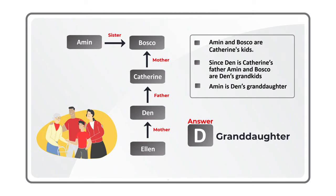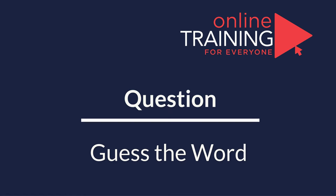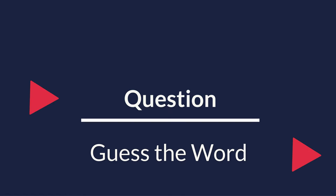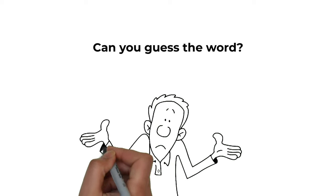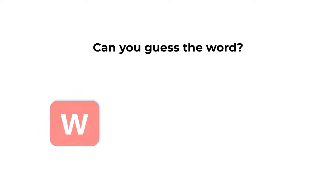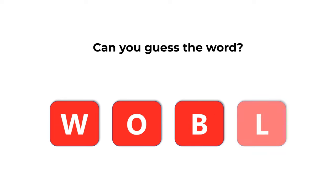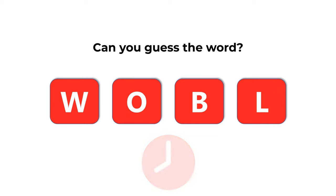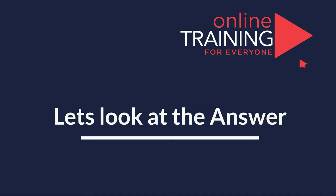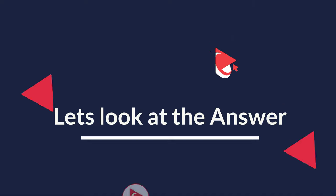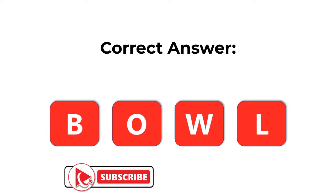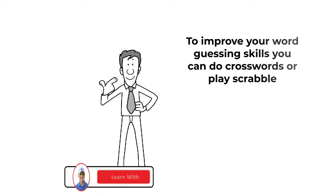Hopefully you've nailed this question and now know how to diagram and solve similar problems on the test. Here's a cool question that you frequently get on the test. You're presented with four different letters and you need to guess the word using all the letters presented. The letters are W, O, B, and L. Give yourself 10 to 15 seconds to see if you can come up with the answer. The correct answer is Bowl, spelled B-O-W-L.